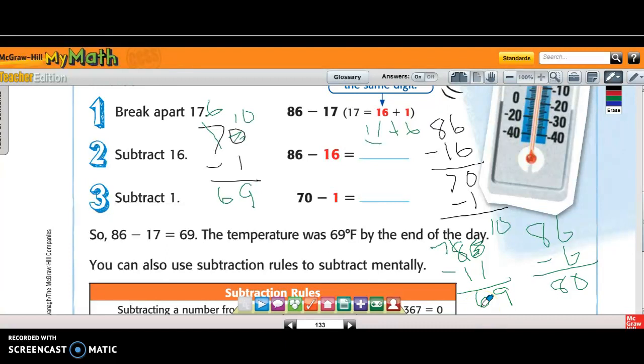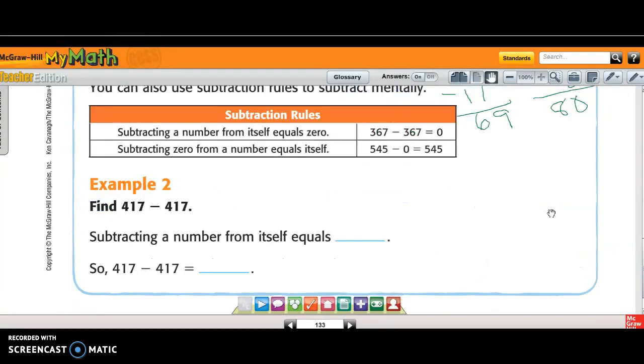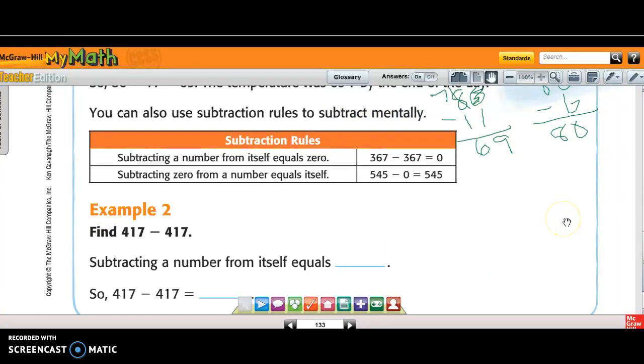So when I decompose, there's many ways of decomposing 17. Look at number 2. However, there's some subtraction rules. It says subtracting a number from itself equals 0. So 10 minus 10, 100 minus 100, 1 billion minus 1 billion is always 0. And then here's the example that they give you. 367 minus 367 is 0.